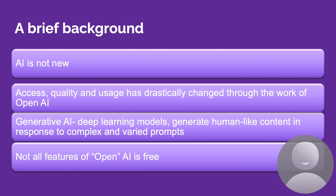I am going to use the definition of generative AI from Leem et al.'s 2023 paper entitled 'Generative AI and the Future of Education.' Leem and colleagues identify three components of generative AI: the first is that it is a deep learning model, that deep learning model generates human-like content, and that human-like content is a response to complex and varied prompts. I also want to emphasize that even though it's titled OpenAI, not all features of various OpenAI platforms such as ChatGPT or BARD are entirely free — there are elements of the platform that are behind paywalls, which is a conversation for future presentations.